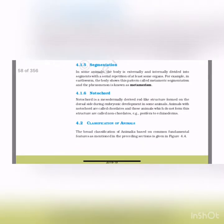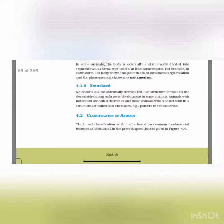Notochord: a mesodermally derived rod-like structure formed on the dorsal side during embryonic development in some animals. Animals with notochord are called chordates; those that do not form this structure are called non-chordates. Porifera to echinoderms are non-chordates. The notochord in the future will develop into the vertebral column. Not all chordates are vertebrates, but all vertebrates are chordates — this is a very important statement.